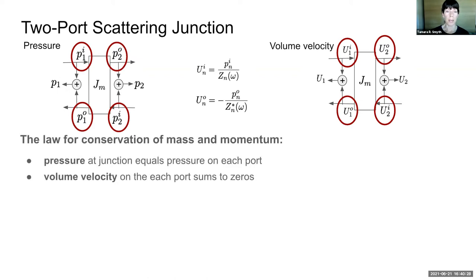The law for conservation of mass and momentum dictate that the pressure at the junction equals the pressure on each port. The volume velocity on each port sums to zero.